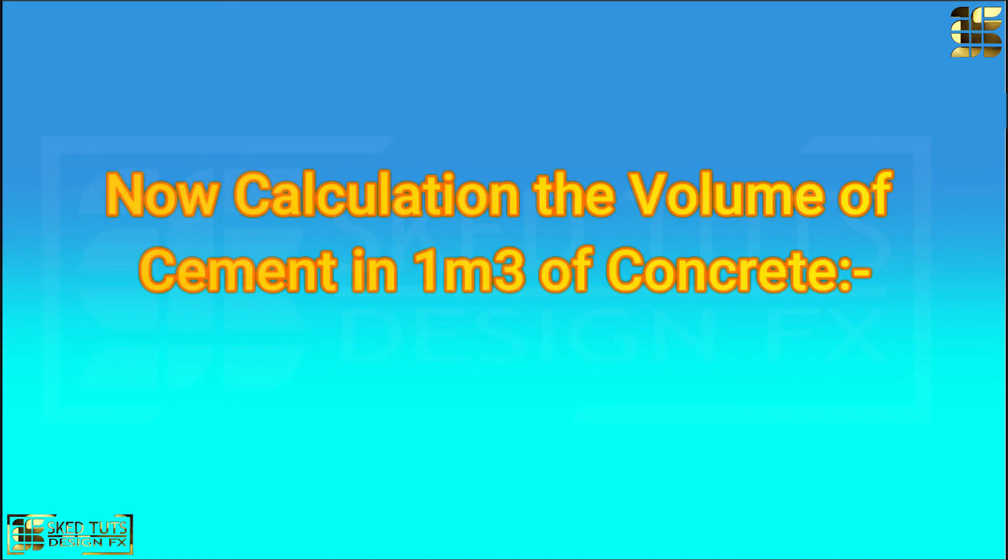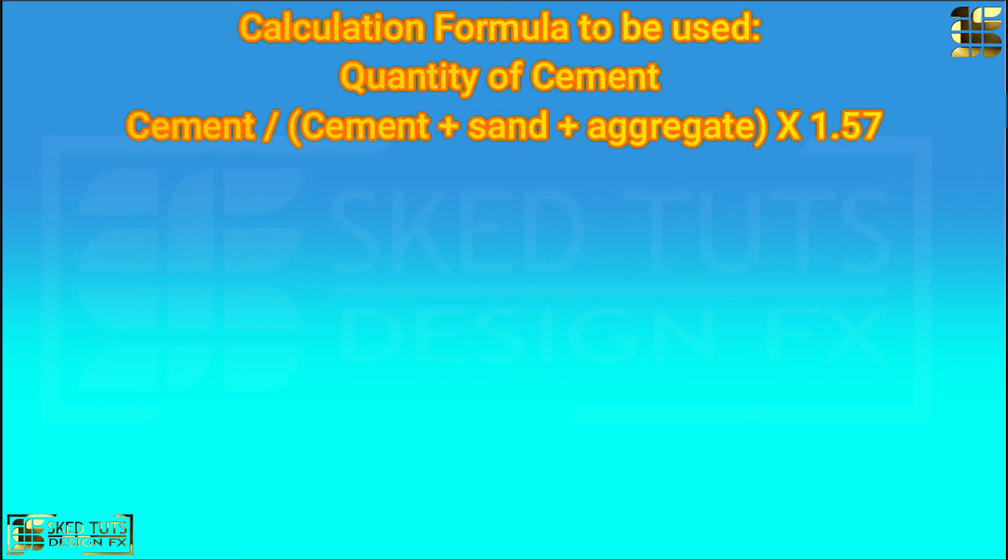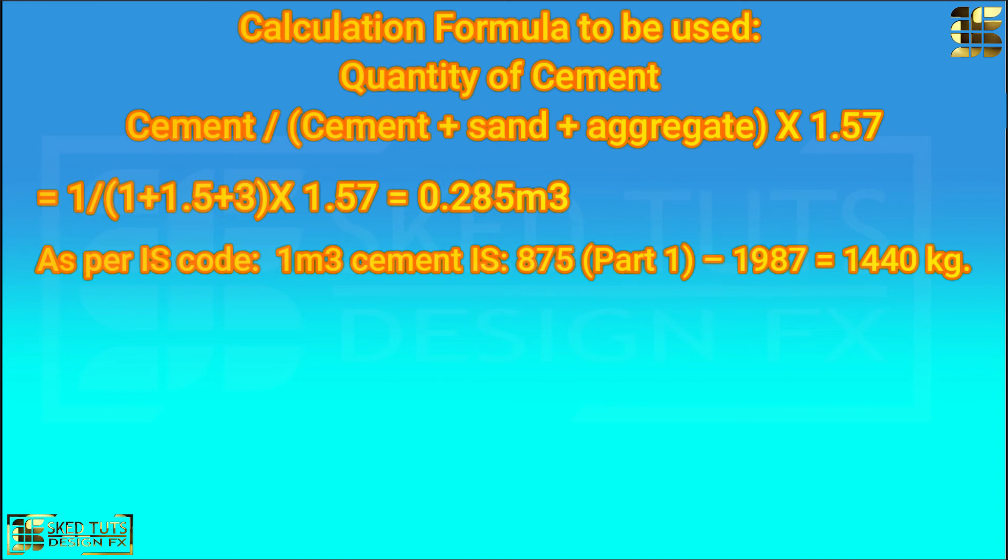Now calculate the volume of cement in 1 cubic meter of concrete. So calculation formula to be used: Cement divided by cement plus sand plus aggregate into 1.57. So 1 divided by 1 plus 1.5 plus 3 into 1.57 is equal to 0.285 cubic meter. As per IS code IS 875 part 1.97 in 1 cubic meter cement weight is 1440 kg. So 1440 into 0.285 is equal to 410.5 kg.